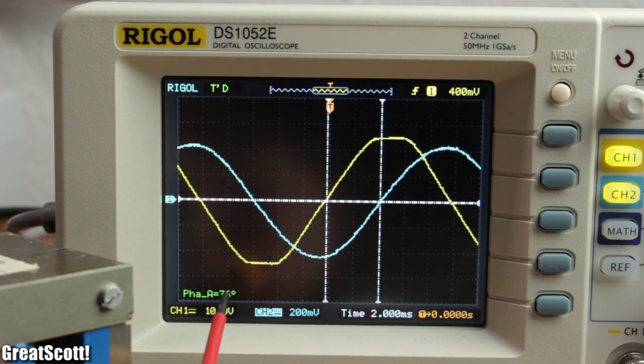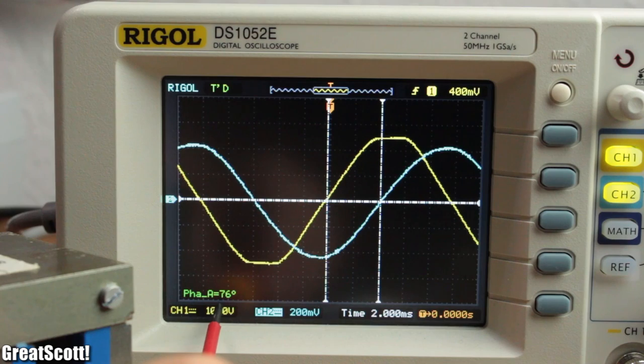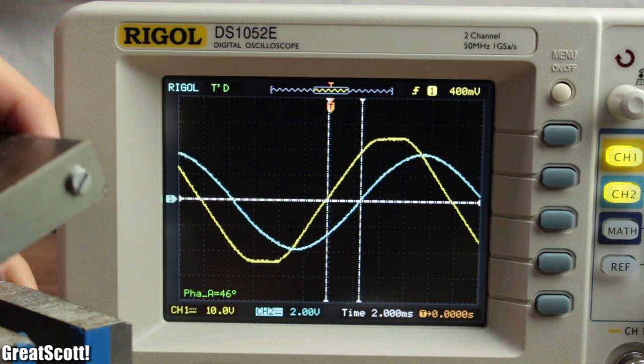This is called a phase shift and it can reach up to 90 degrees with an ideal inductive load. Here I can change it very easily by playing around with the iron core.